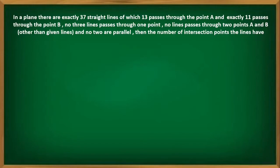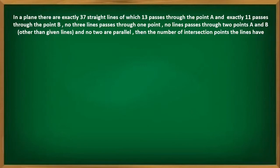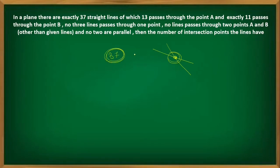No two lines are parallel, meaning every pair of lines is going to intersect. We need to find the number of intersection points. From 37 straight lines, how many pairs can be formed? That is simply 37C2. But there is a problem we have to deal with because of the special conditions mentioned.